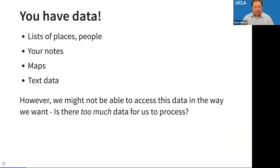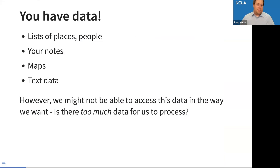A lot of humanities people don't really think of their research in terms of data, but it's there. If you have lists of places or people, that's data. Your notes, the things that you take — that's data. Maps, text. You may not think of it as data, and now that you do, you may not be able to access or process it all. That's really the quandary we're facing.